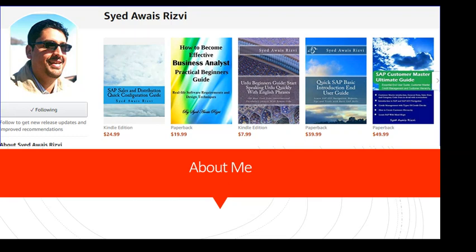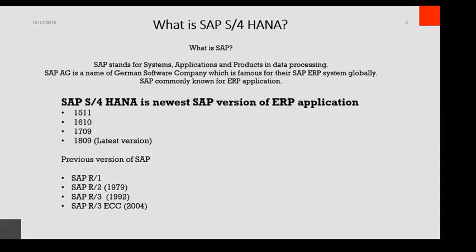So what is SAP S4 HANA? First of all, what is SAP? SAP stands for System Application Product in Data Processing. It's the name of a German software company, and also the name of an ERP application.